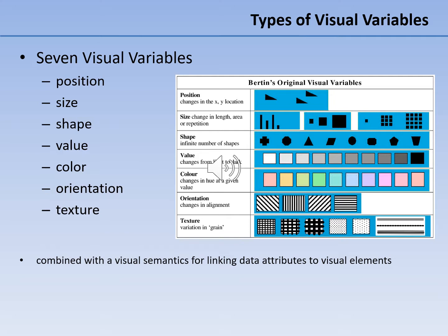Graphic variables are the ways in which the symbology or visual appearance of map elements can be controlled. These visual techniques can be used to create a pleasing aesthetic, convey precise geographic information, and create a visual hierarchy that can be understood by the viewer of the map. Jacques Bertin, a French cartographer, identified seven main categories of visual variables: position, size, shape, value, color, orientation, and texture.